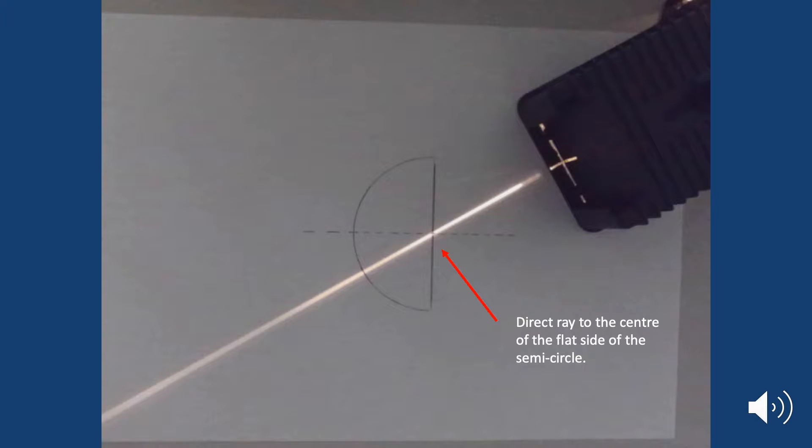Here we have our beam of light from the Hodson lightbox directed across the piece of paper. You can see where I've traced in the semicircle prism, the glass prism, and I've drawn in at the very middle of the flat side a normal line going all the way through. Without the prism present we can see the ray is uninterrupted as it moves across the page. I've directed it at where the normal line meets the flat surface.